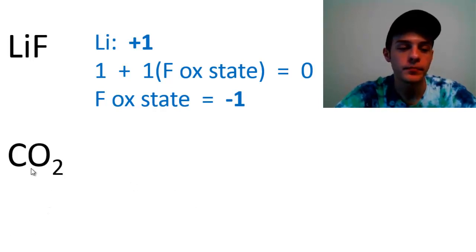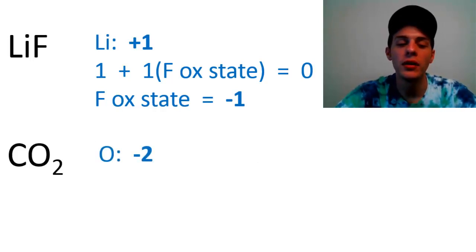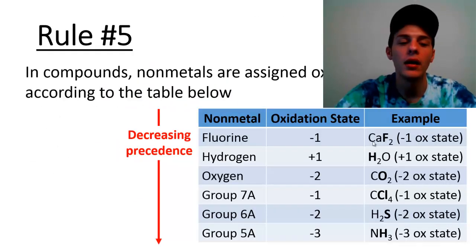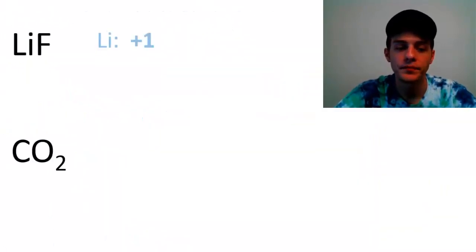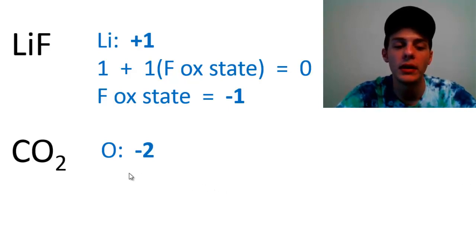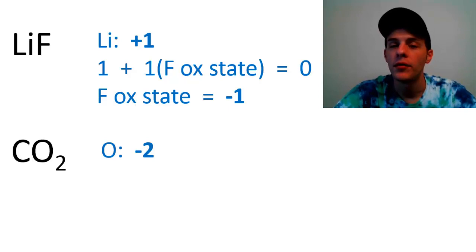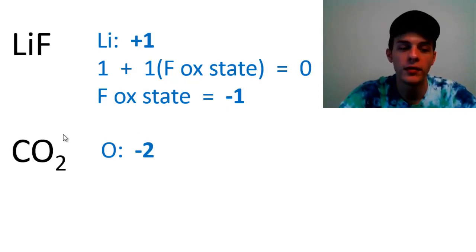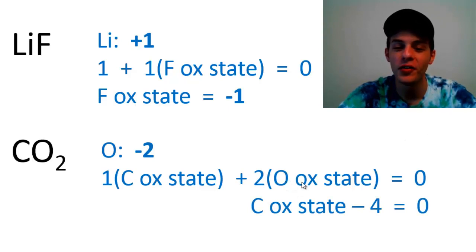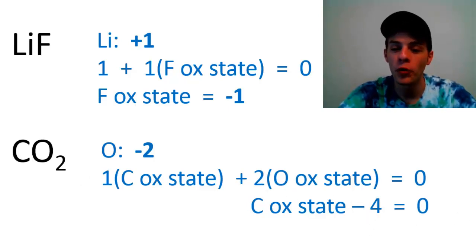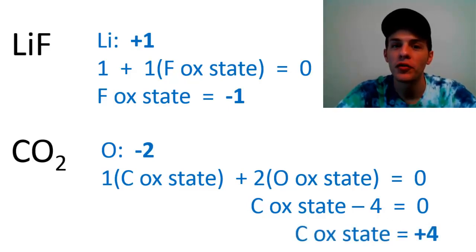For CO2: by rule five, oxygen has an oxidation state of −2. Using rule three, one times the oxidation state of carbon plus two times the oxidation state of oxygen equals zero. Two times −2 is −4, so the oxidation state of carbon minus four equals zero. Adding four to both sides gives carbon an oxidation state of +4.